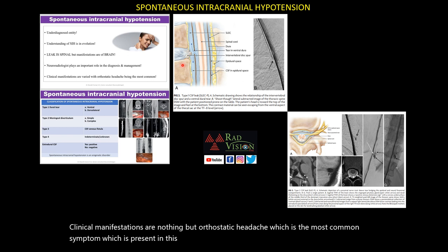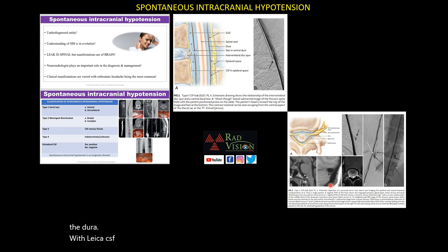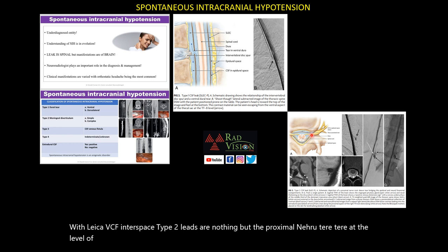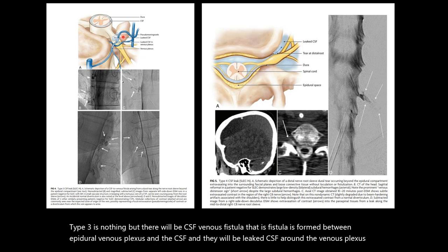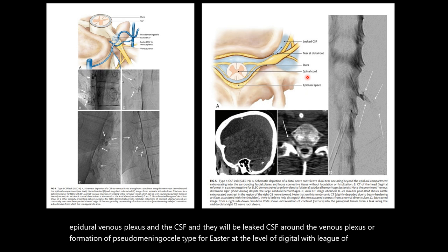There are four types of leaks. Type 1 leak is due to ventral calcified spurs or calcified disc causing a tear in the dura with leak of CSF into the epidural space. Type 2 leaks are proximal nerve root tears at the level of the proximal nerve root with CSF leak into the epidural space. Type 3 is a CSF-venous fistula between the epidural venous plexus and the CSF, with leaked CSF around the venous plexus or formation of pseudomeningocele. Type 4 is a tear at the level of the distal nerve root with CSF leak into the epidural space.